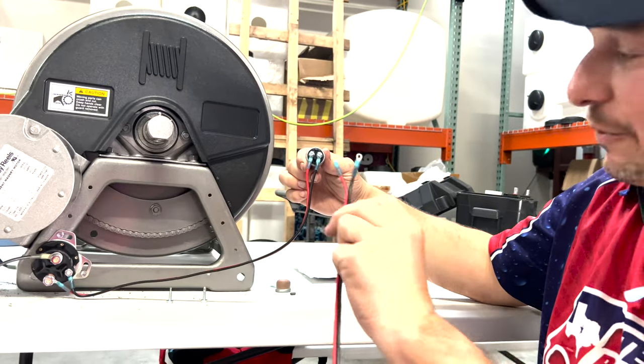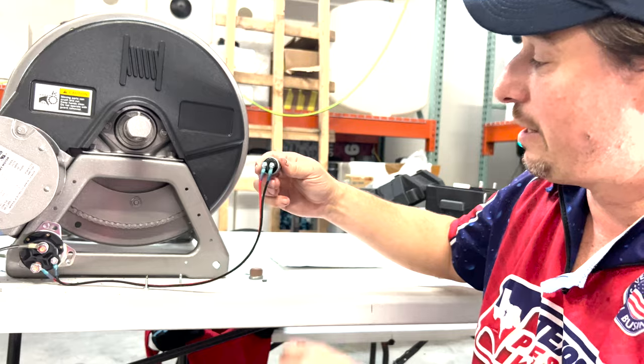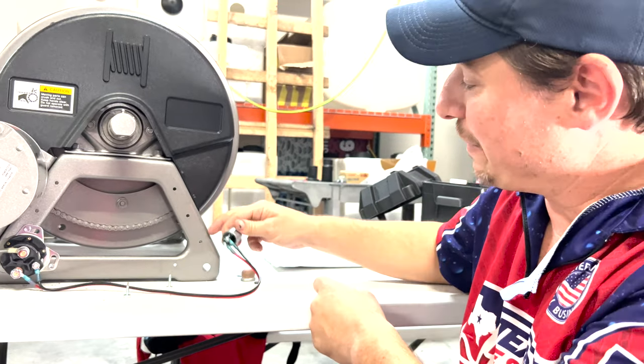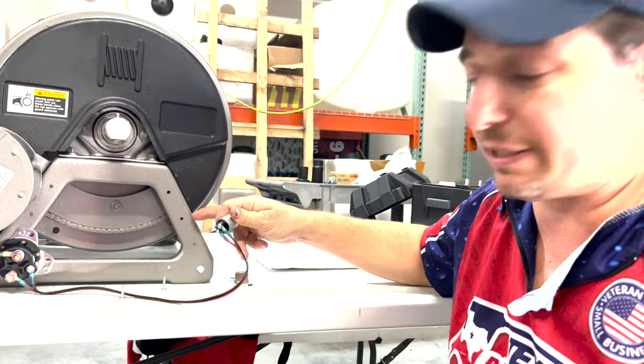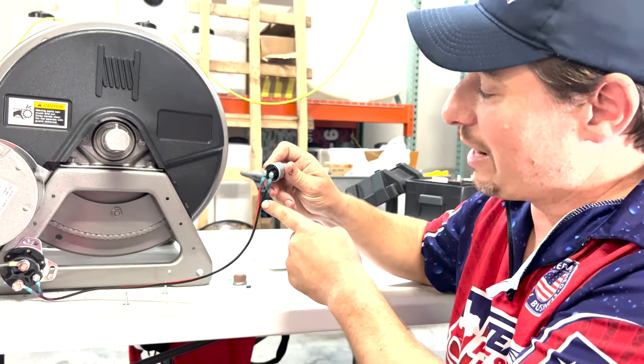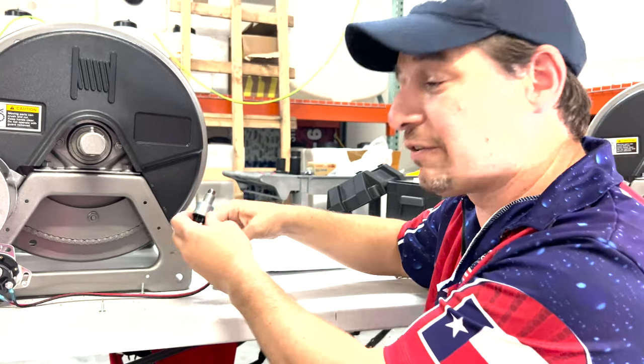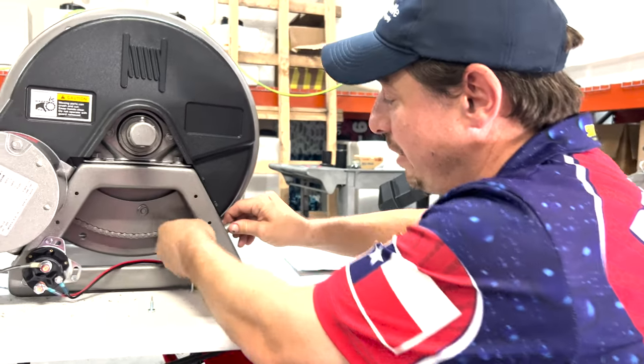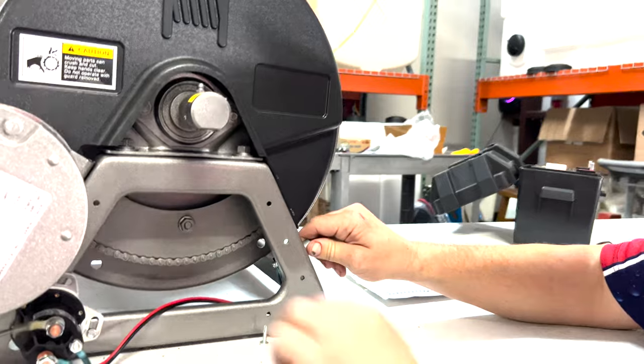Once you have this set up, you can connect it to there. Now, the reason I always put the blacks on this side is because your frame is going to be grounded. If you have your grounded one next to the frame, if it does happen to touch through vibration, there'll be less of a chance of grounding out your switch.